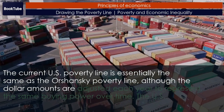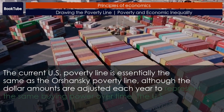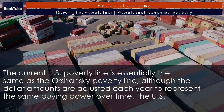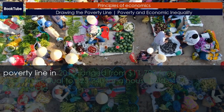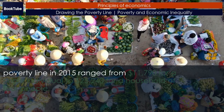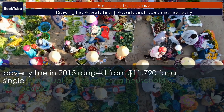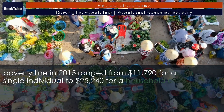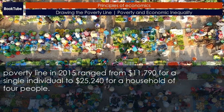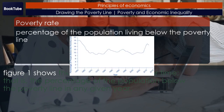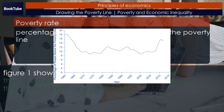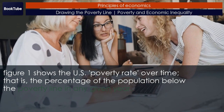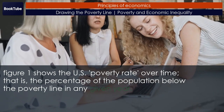Although the dollar amounts are adjusted each year to represent the same buying power over time, the U.S. poverty line in 2015 ranged from $11,790 for a single individual to $25,240 for a household of four people. Figure 1 shows the U.S. poverty rate over time — that is, the percentage of the population below the poverty line in any given year.